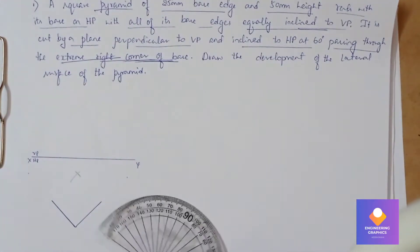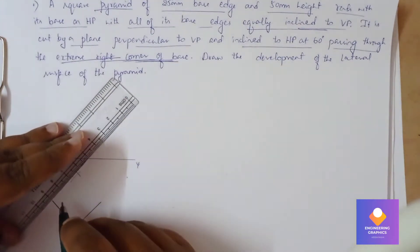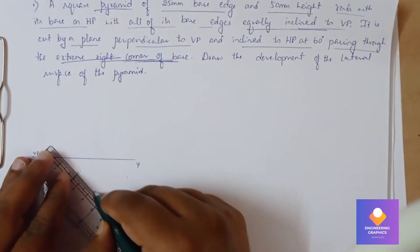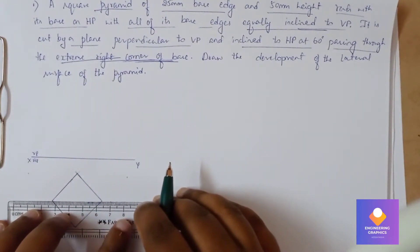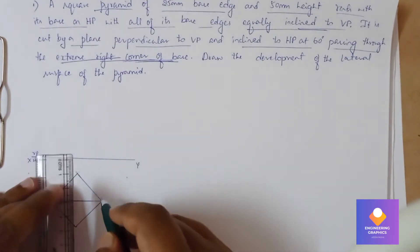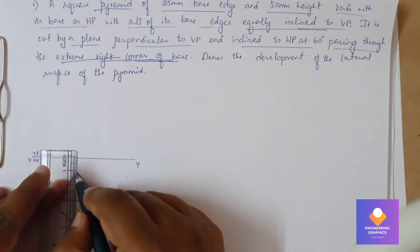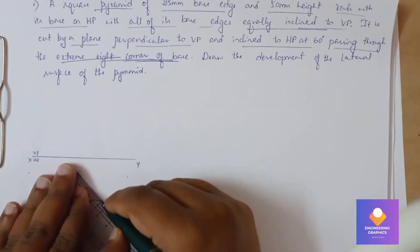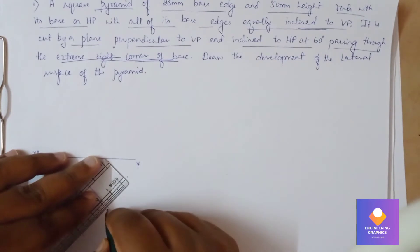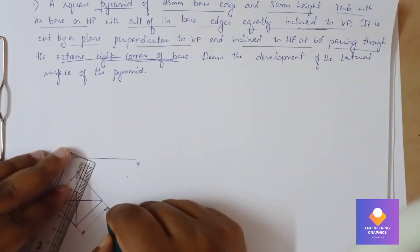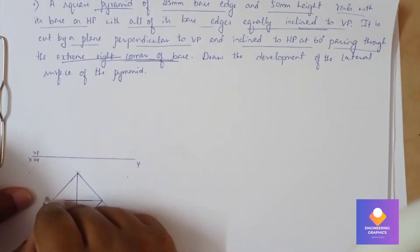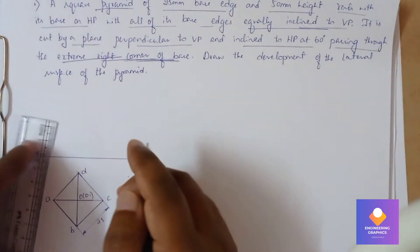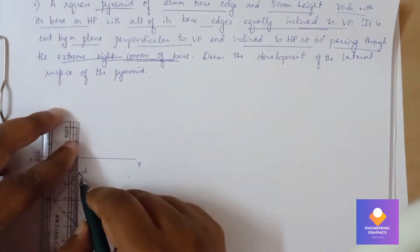Join the corners with the help of a scale to complete the square. Since it is a square pyramid, we draw thick lines inside as slant edges. Mention the dimension on one side — 25mm. Label the corners a, b, c, d, with the center of the axis marked. Then project upward to complete the front view.